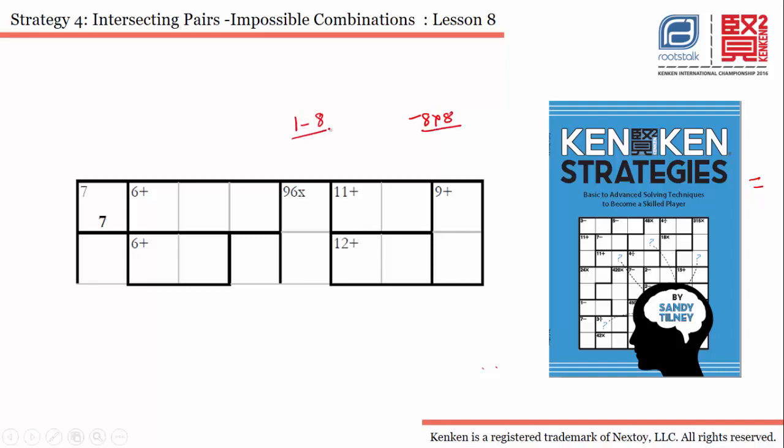Let's start with this. It says 6+ and we have three cells in the same row, so the only possible combination is 1, 2, and 3. There is no other combination possible.